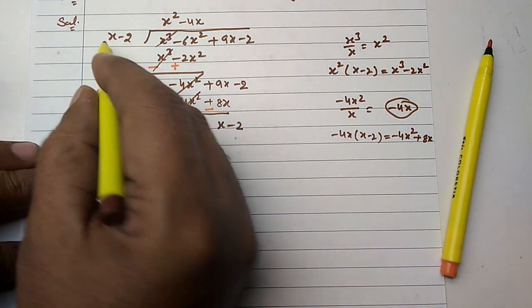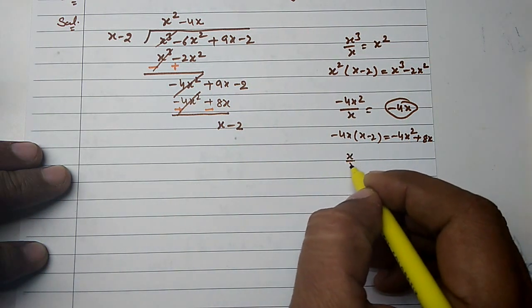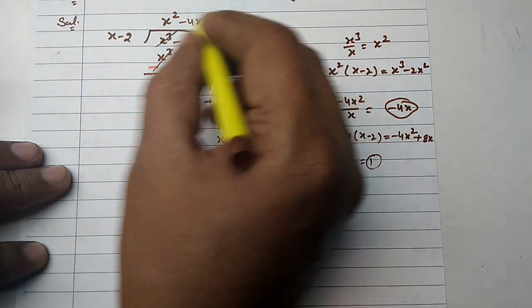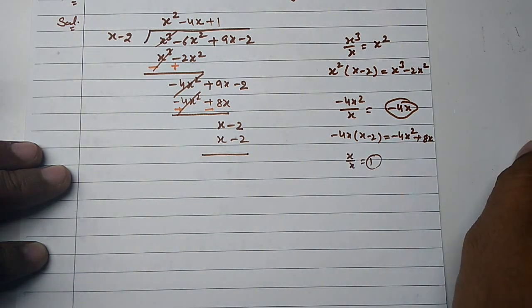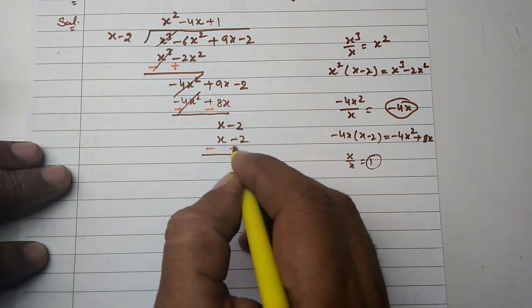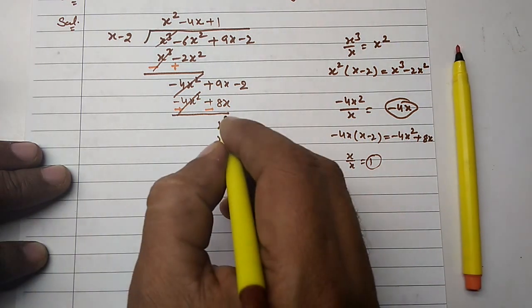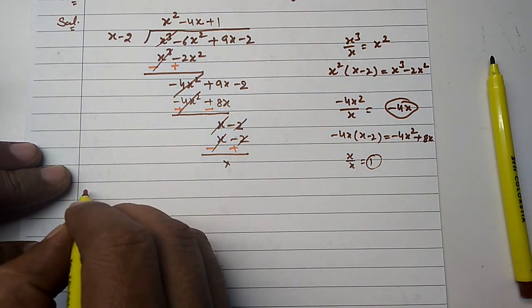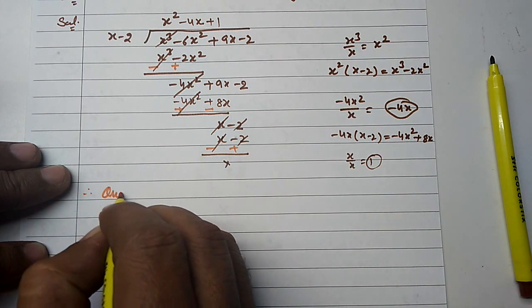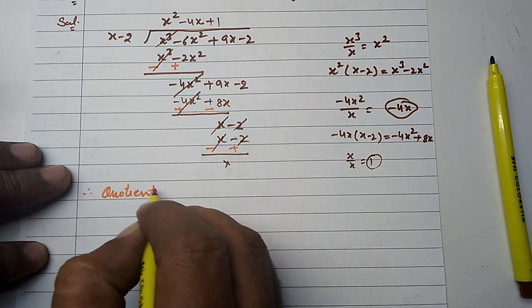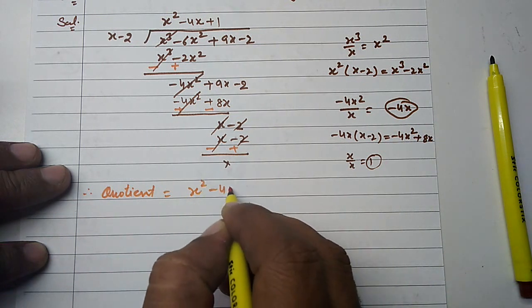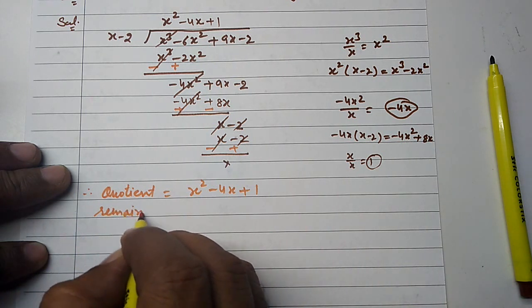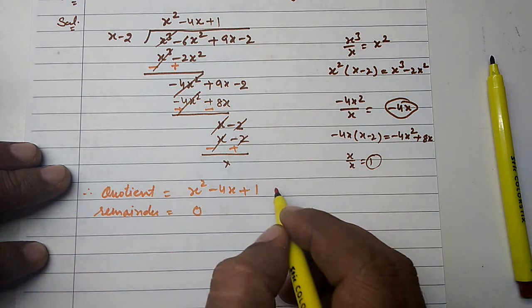We have 9x minus 8x equals x, brought down with minus 2. Then x divided by x equals 1, so we multiply 1 by x minus 2 to get x minus 2. After sign change, x cancels with x and 2 cancels with 2. Therefore quotient is x squared minus 4x plus 1 and remainder is 0.